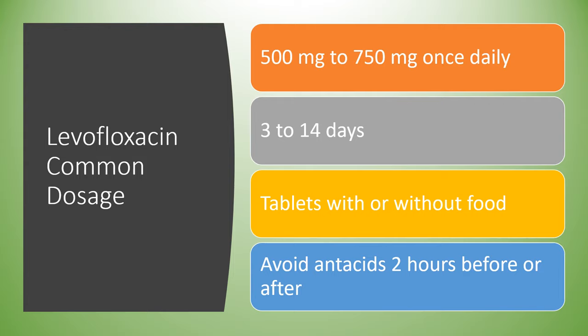As far as outpatient pharmacy dosage, you're typically looking at 500 or 750 milligram tablets, though there is also a 250 milligram tablet. Depending on the infection — for a UTI it might be a three-day course, while something more severe like prostatitis could be taken for up to six weeks. Other infections just depend on the infection and the risk involved.